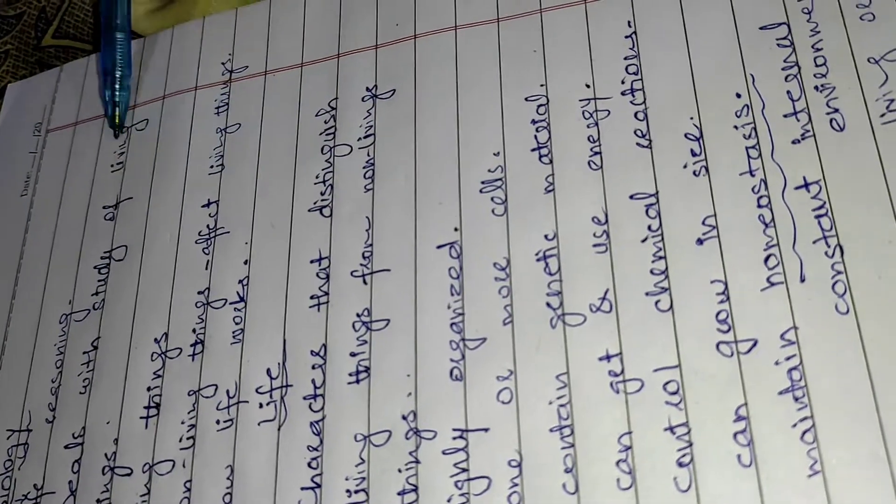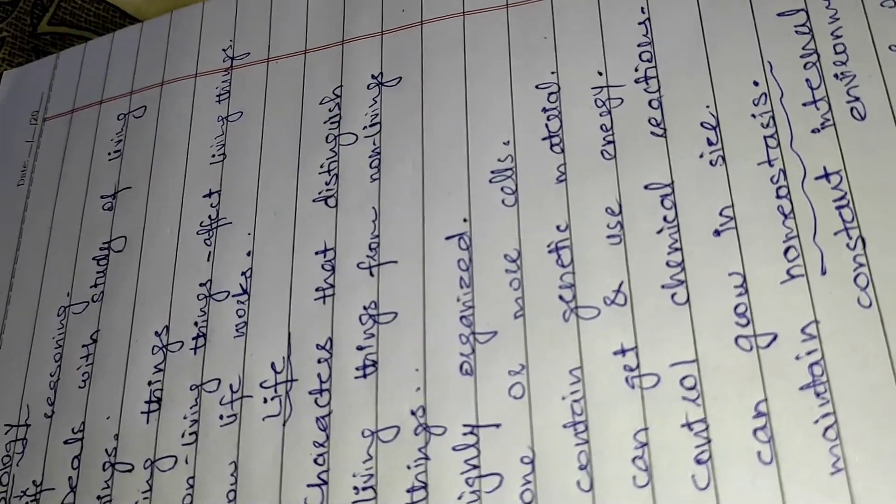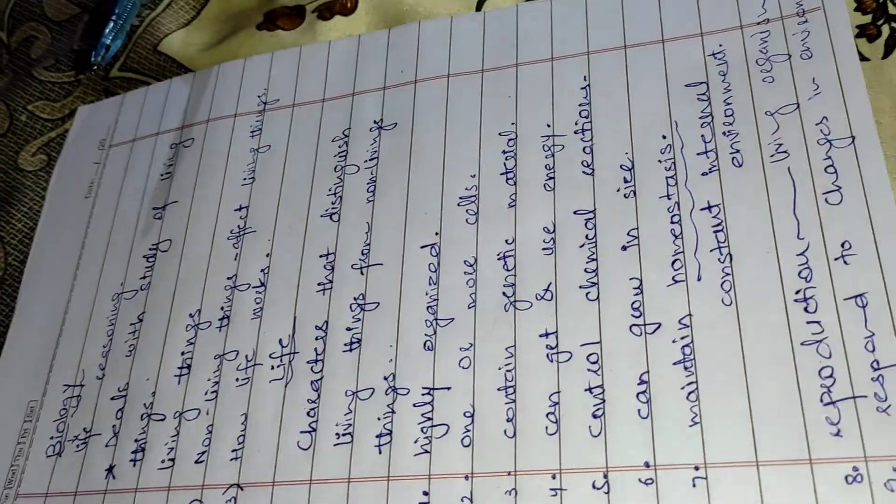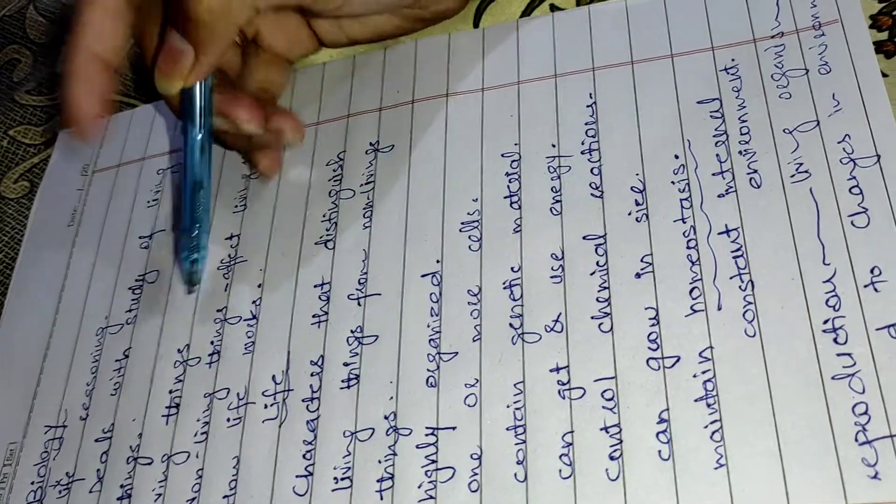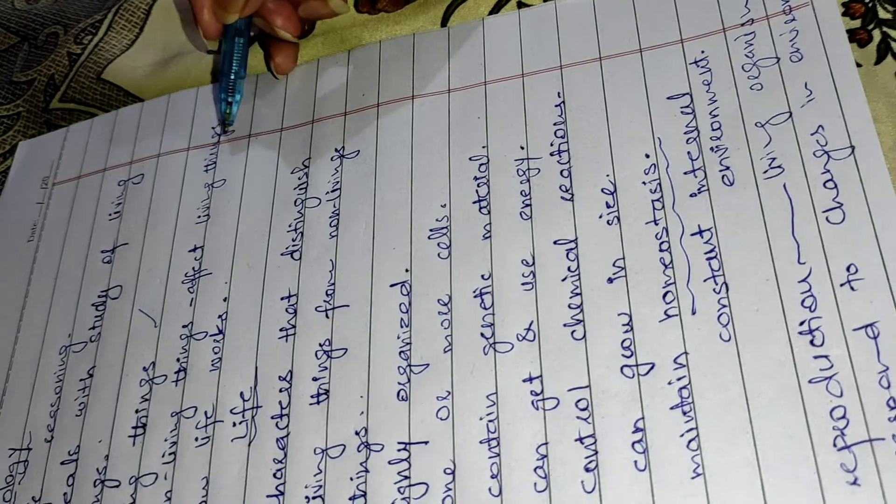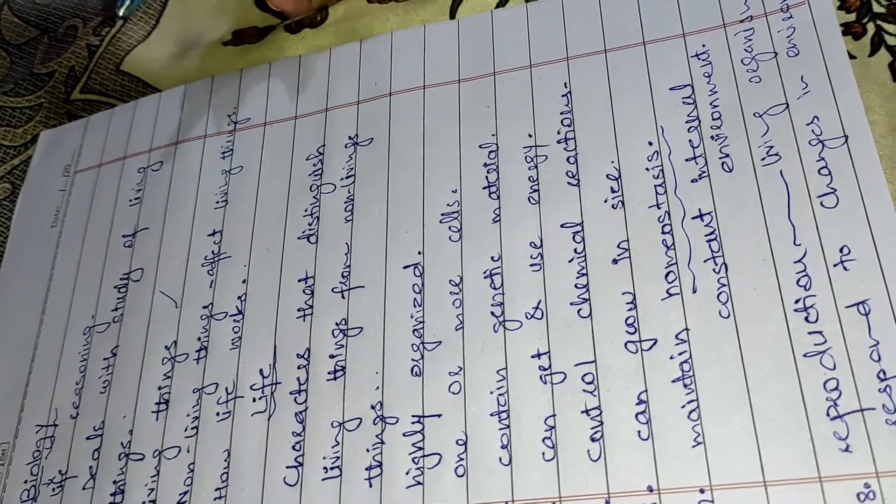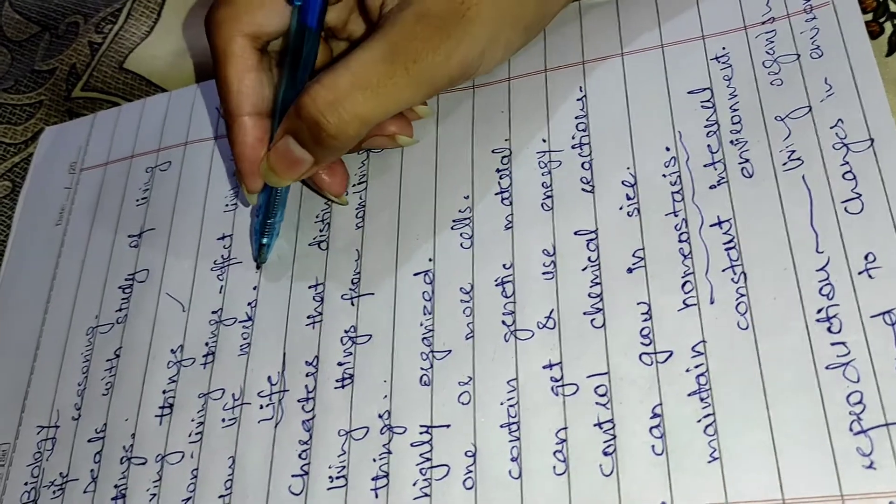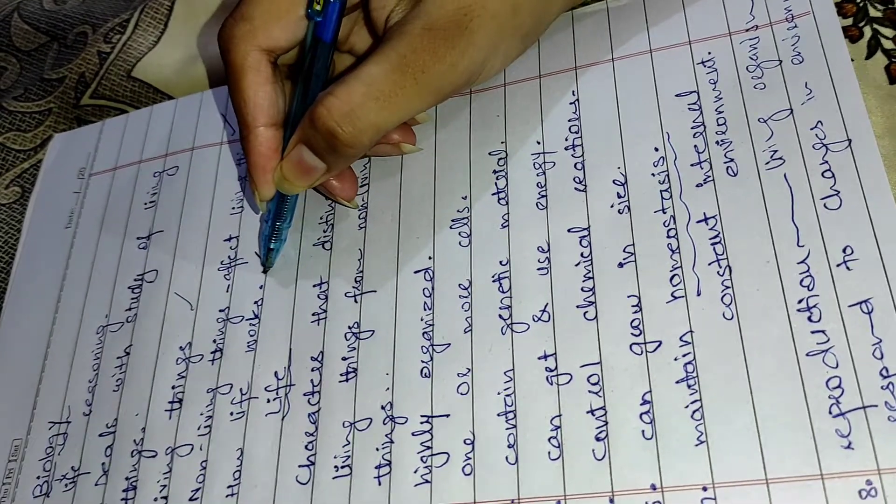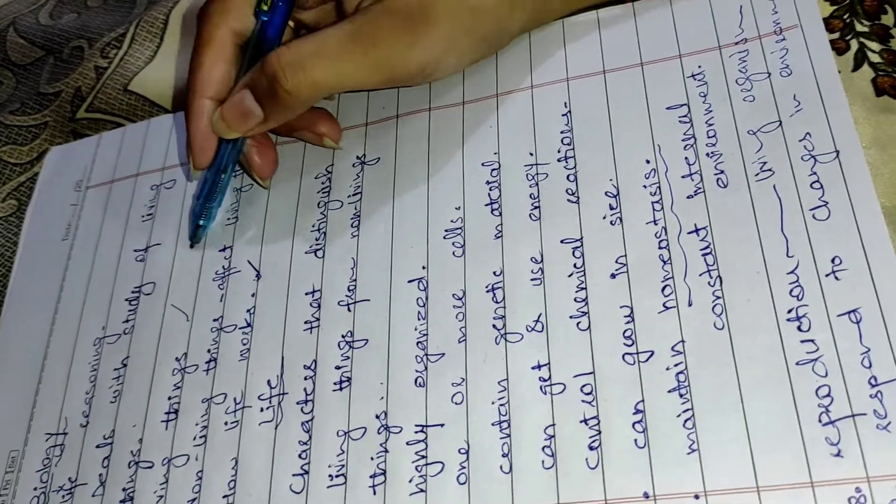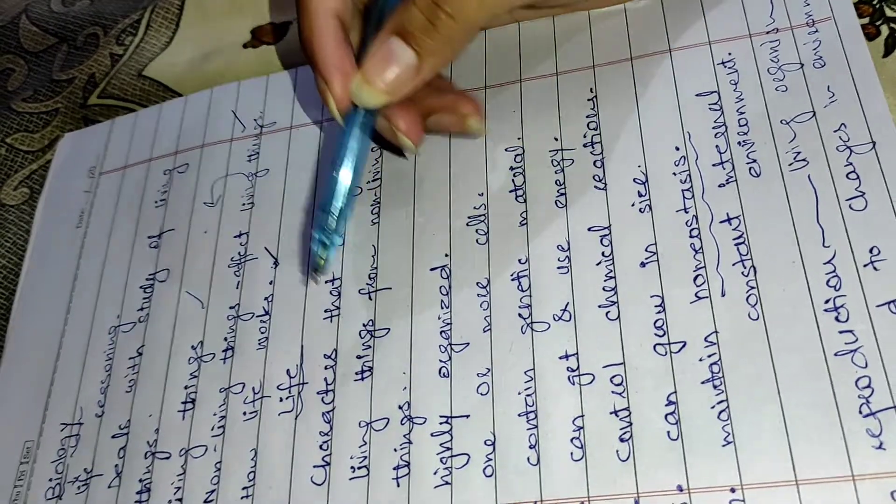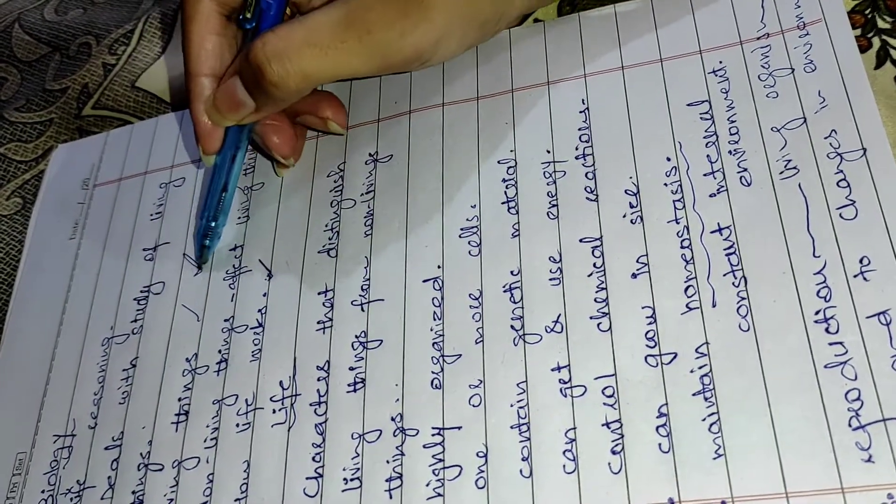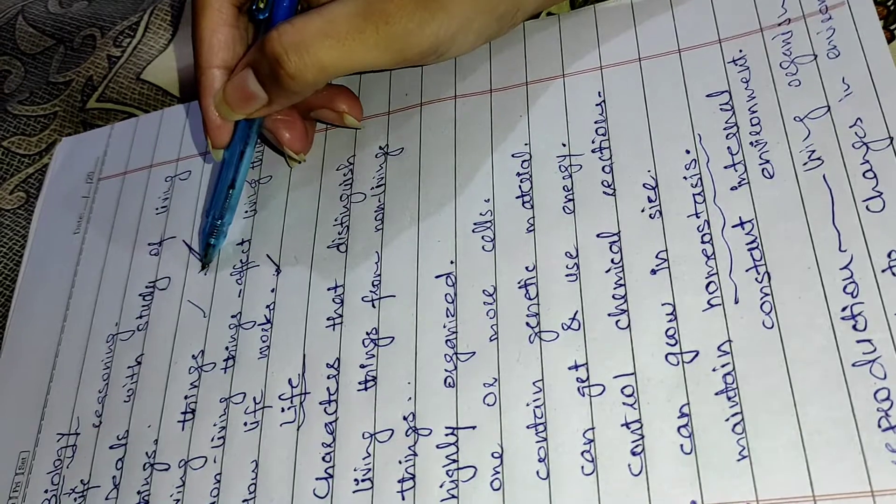After that, the scientists and biologists deal with three things. Number one is living organisms, living things. Number two is non-living things affect living things. The last one is how life works. How non-living affects living and how living things resist that change, which is caused by non-living factors.